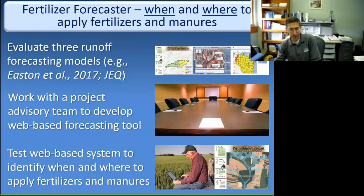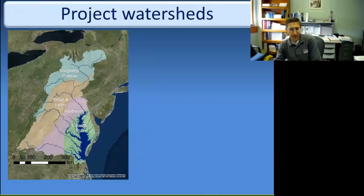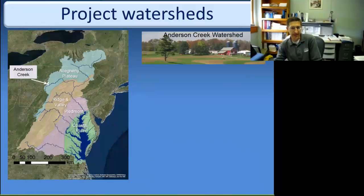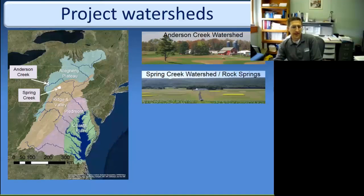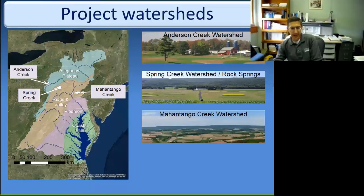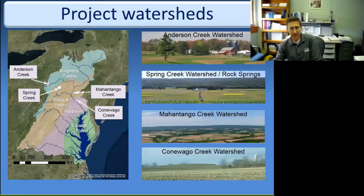We're currently testing a prototype system, and we hope to have it more available to the public — at least in the watersheds where we're working — by the end of the summer. Our project is mostly focused in Pennsylvania, in the Chesapeake Bay part of Pennsylvania. We have four project watersheds spanning the physiography of the upper Chesapeake: Anderson Creek in the Allegheny Plateau underlain by sedimentary rock, Spring Creek in the Ridge and Valley region as a limestone karst watershed, Mahantango Creek in east-central Pennsylvania underlain by shale, and Conolego Creek in the Piedmont region, which is probably the most intensively farmed of the four.